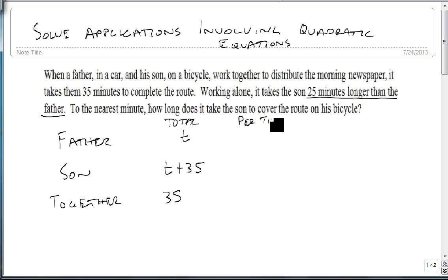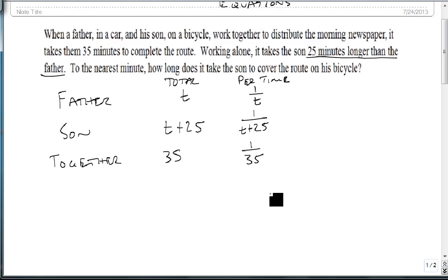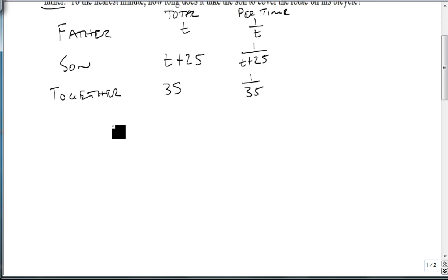Our per time will be 1 over t, 1 over t plus 25, not 35, and 1 over 35 for the together per time. So now we have all the information we need. We set this up as 1 over t plus 1 over t plus 25 equals 1 over 35.